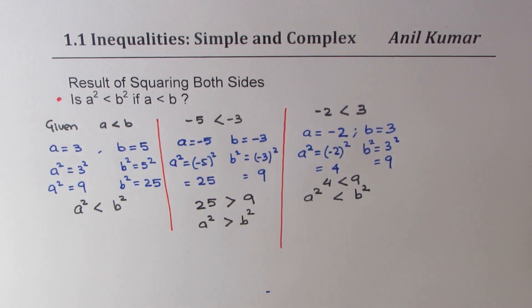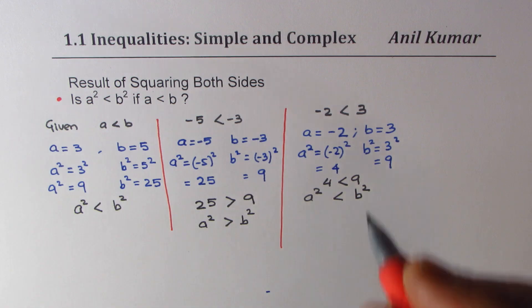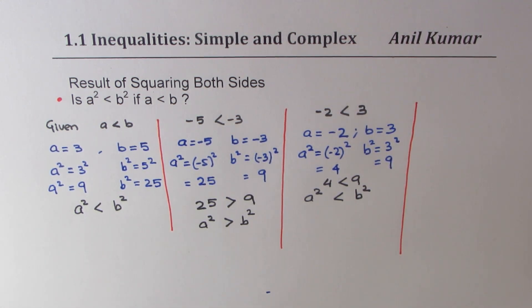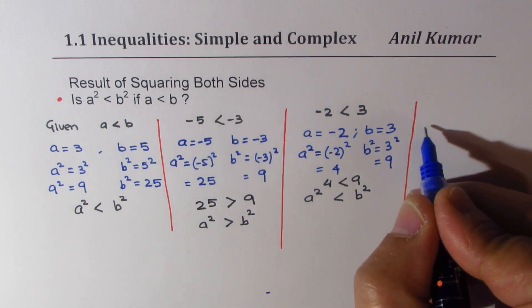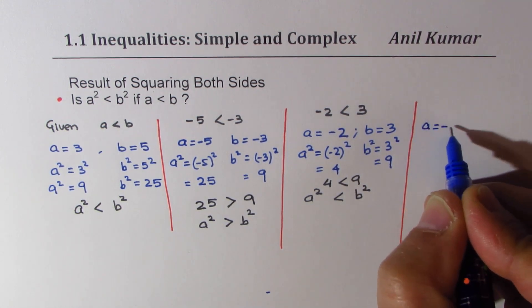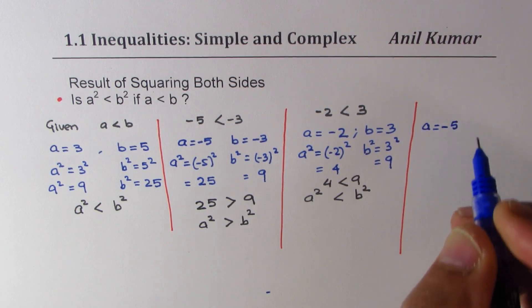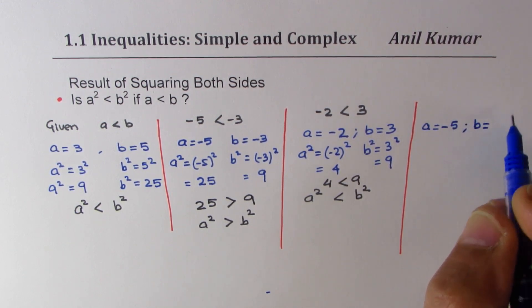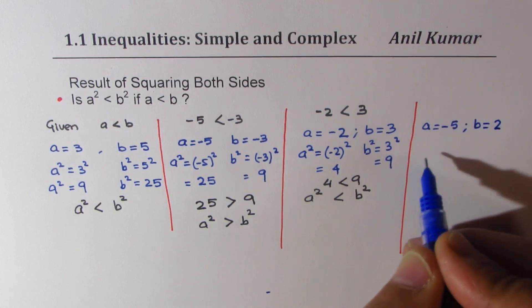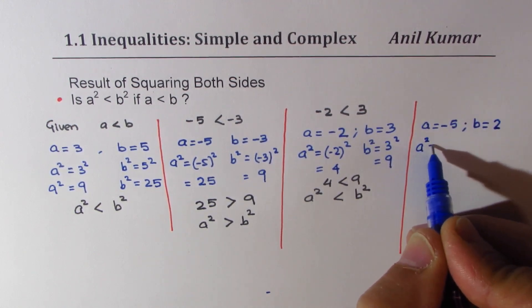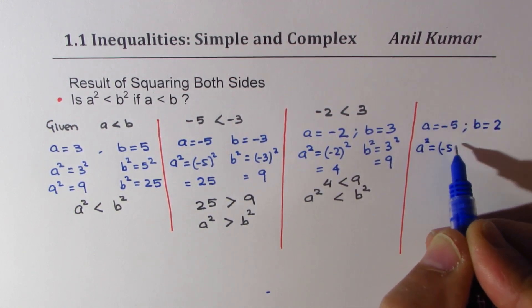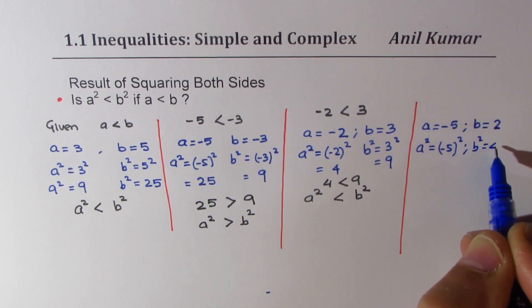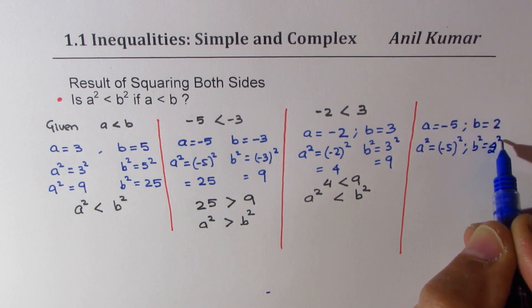Now, let me take other value, more negative value. That is to say, if I take a = -5, and if I take b = 2. In that case, what is a²? a² will be (-5)². And b² is going to be 2², let me write first.